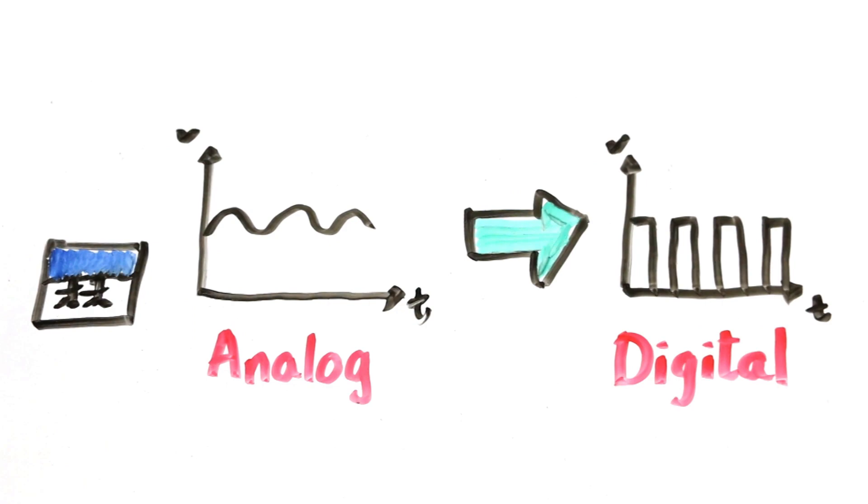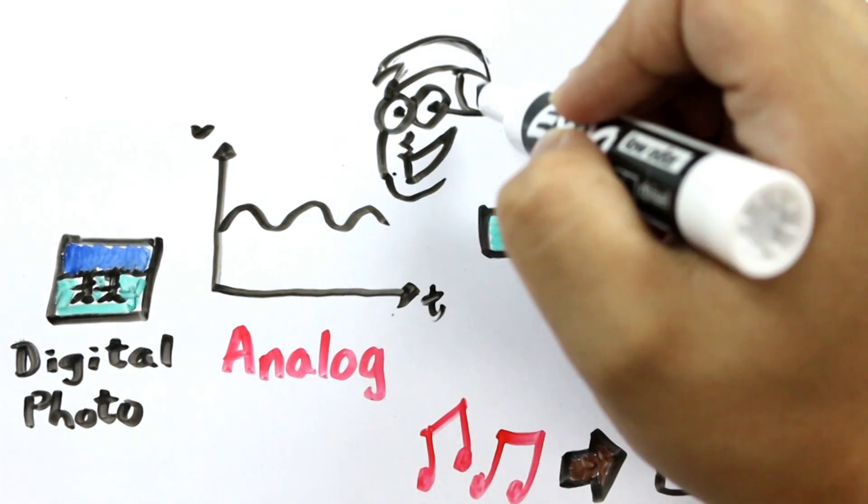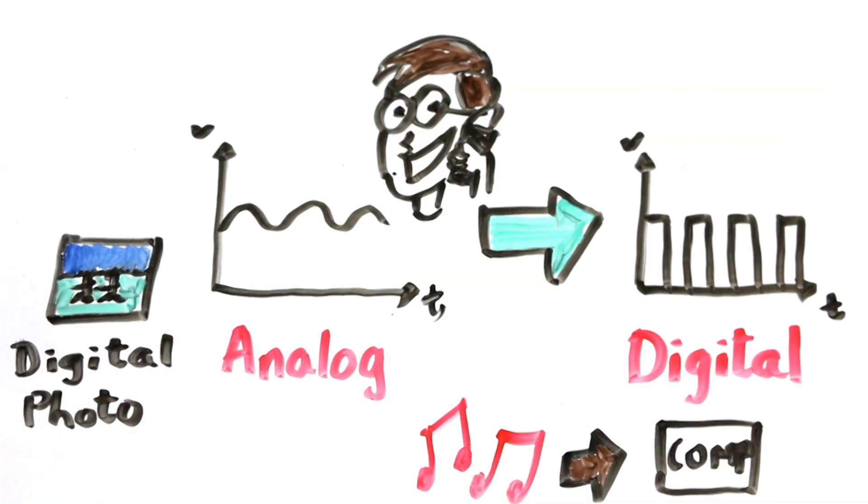You do it every time you make a digital photo, record sound on your computer or speak over a cell phone. The process is called analog to digital conversion.